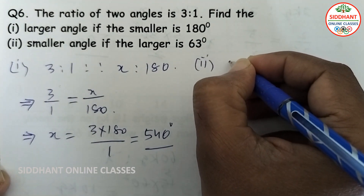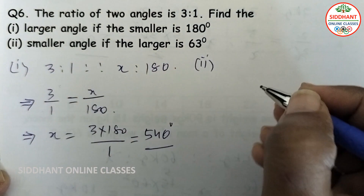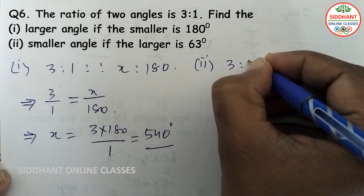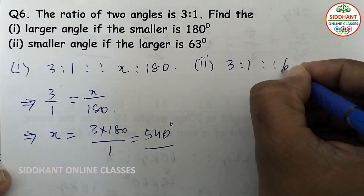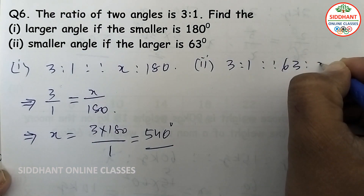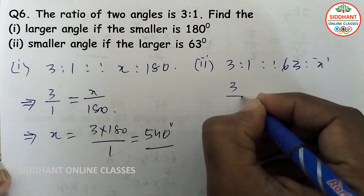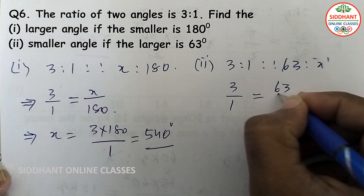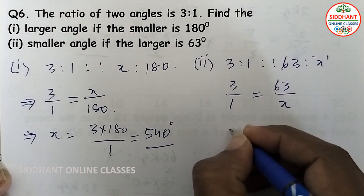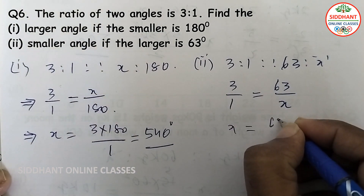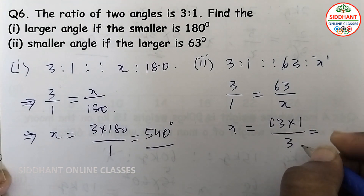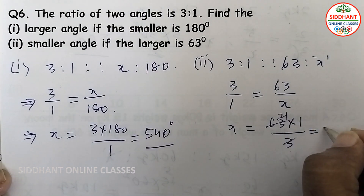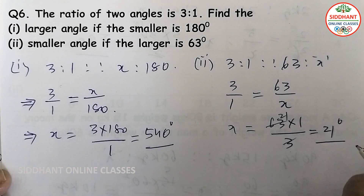Part two: find the smaller angle if the larger is 63 degrees. The ratio is 3 is to 1, so setting up: 3 by 1 equals 63 by x, which gives x equals 63 into 1 divided by 3, so x equals 21. The smaller angle is 21 degrees.